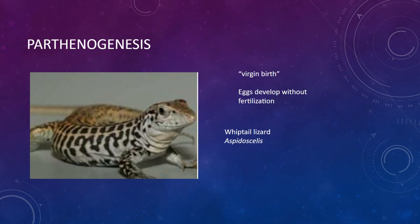Whiptail lizards — some of which are at the Buffalo Zoo — undergo what's called parthenogenesis, meaning virgin birth. They have eggs that just grow into an organism without being fertilized by a male, so the mother and daughter are genetically identical. We see this in organisms that are isolated, like in a desert environment where there's not much opportunity to find a mate. Some lizards and fish will go through parthenogenesis, and you can check these out at the Buffalo Zoo once social distancing guidelines are released.